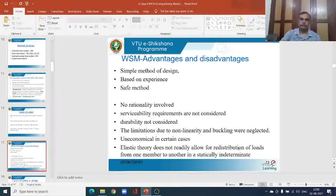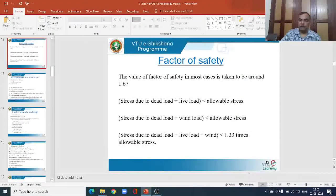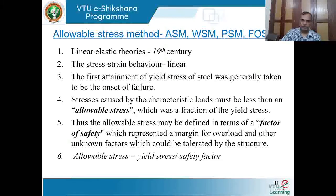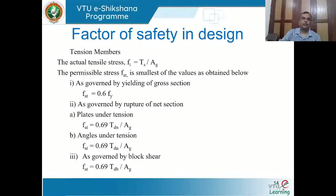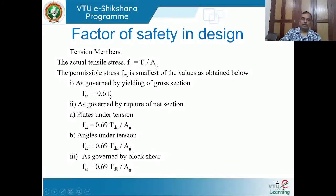The factor of safety is defined as: allowable stress equals yield stress divided by the factor of safety. What is the factor of safety? It is yield stress divided by the allowable stress. In case of a tension member, the actual tensile stress ft equals the tensile load divided by the gross cross-sectional area. What is important is how to get the permissible stress, which is the smallest of the values obtained based on different criteria depending on the element type.